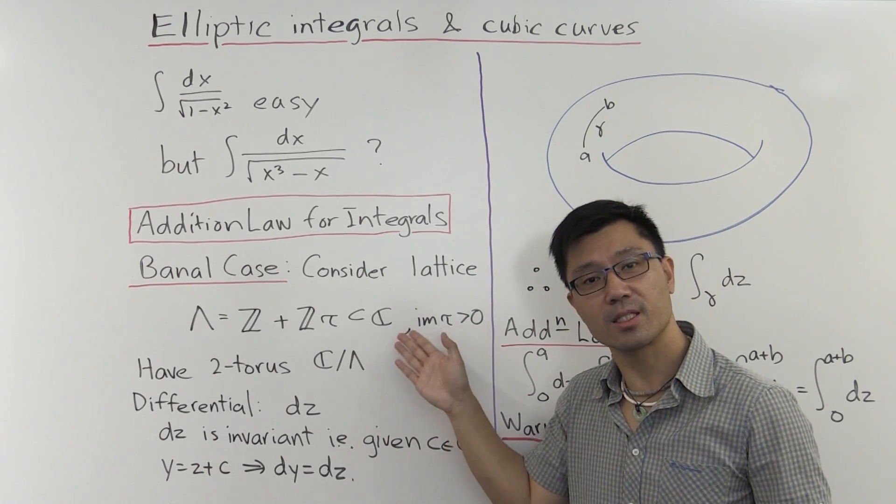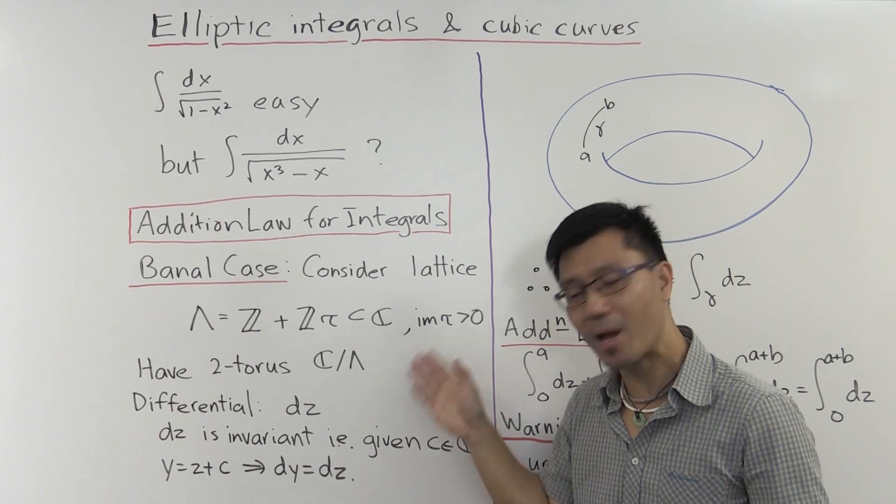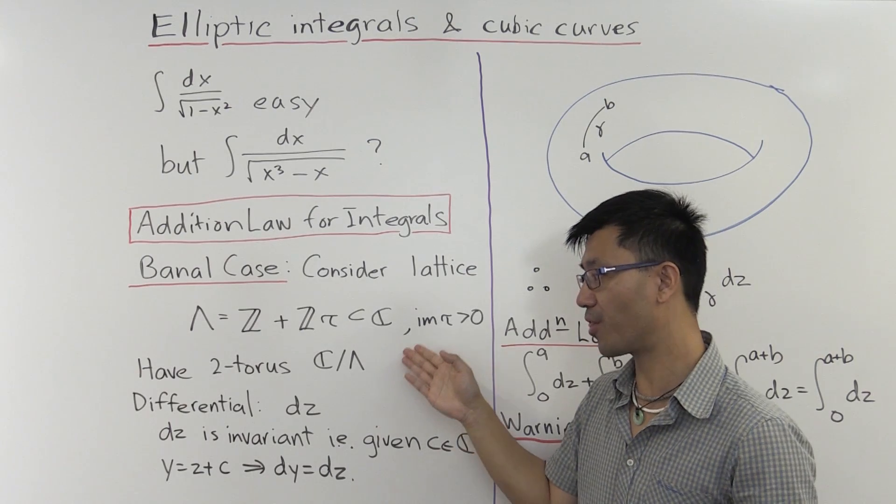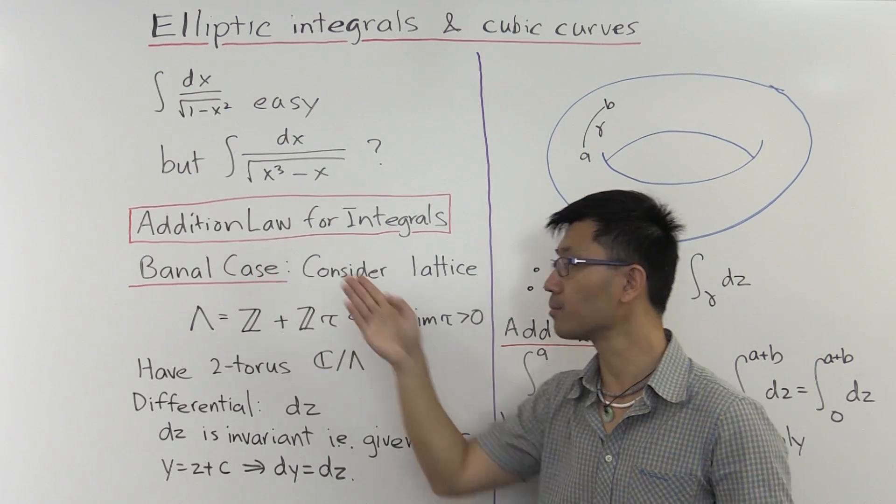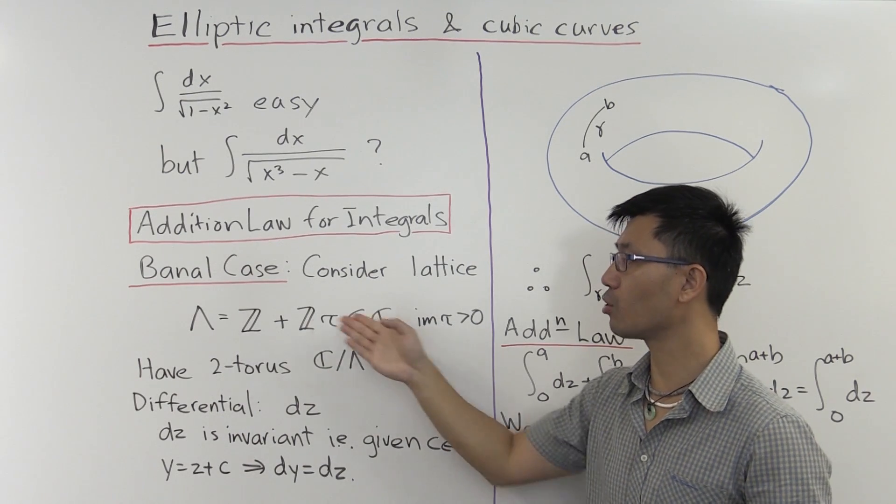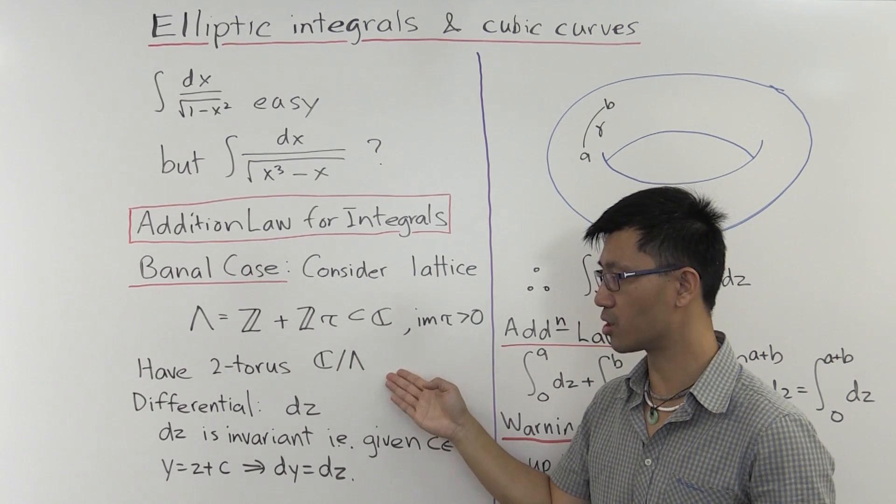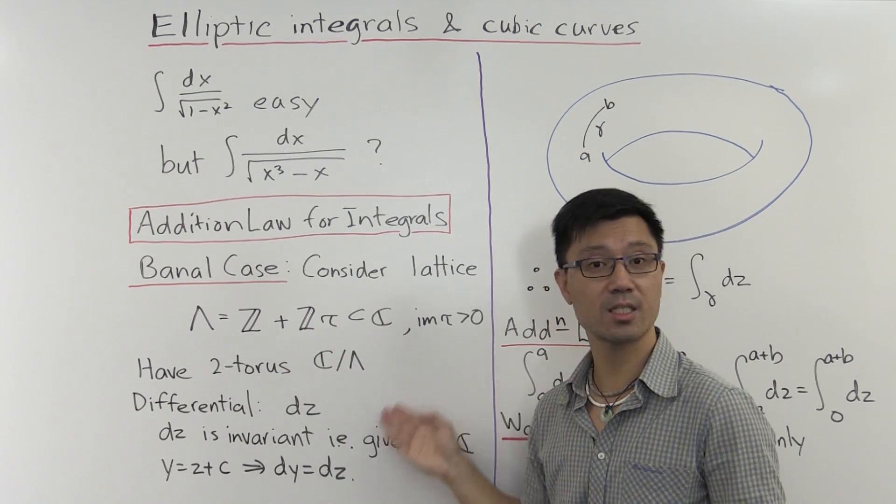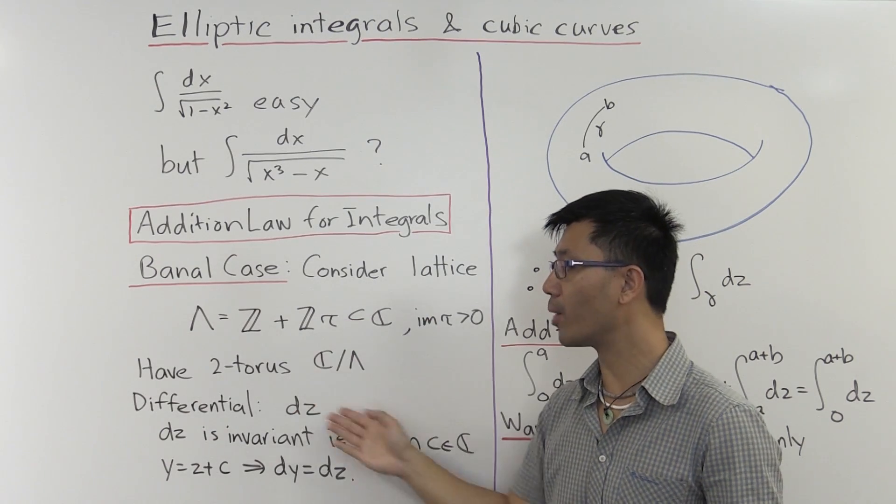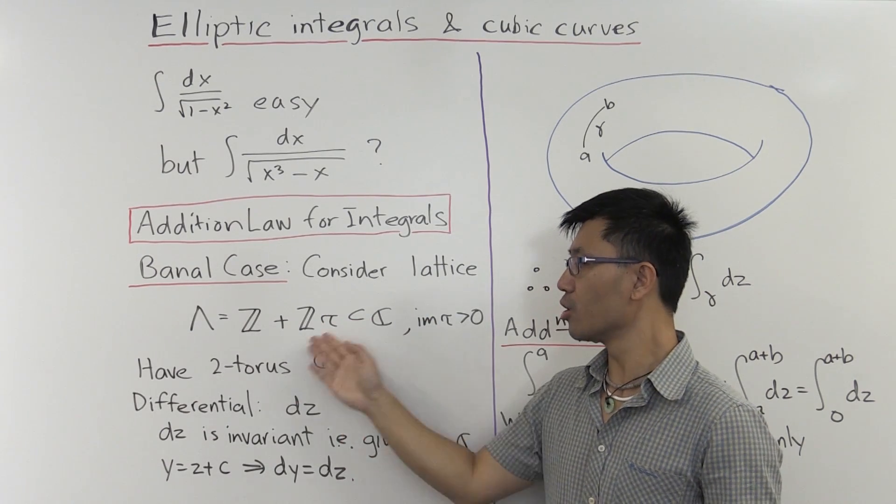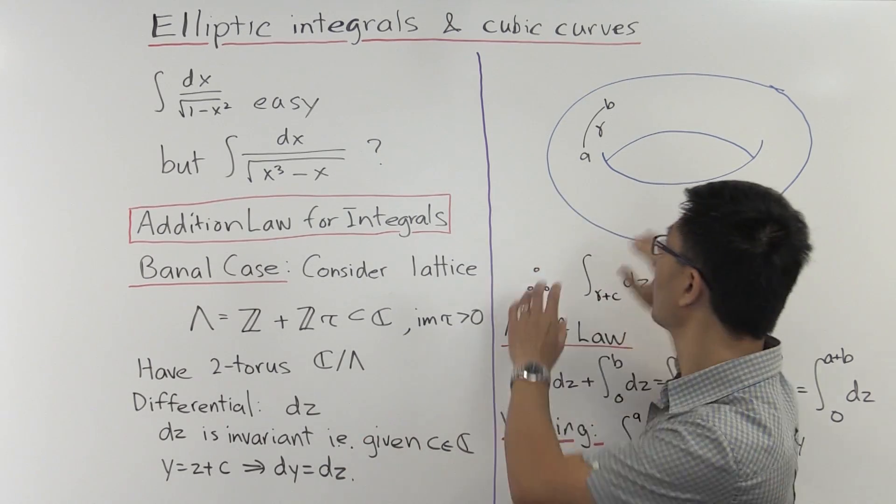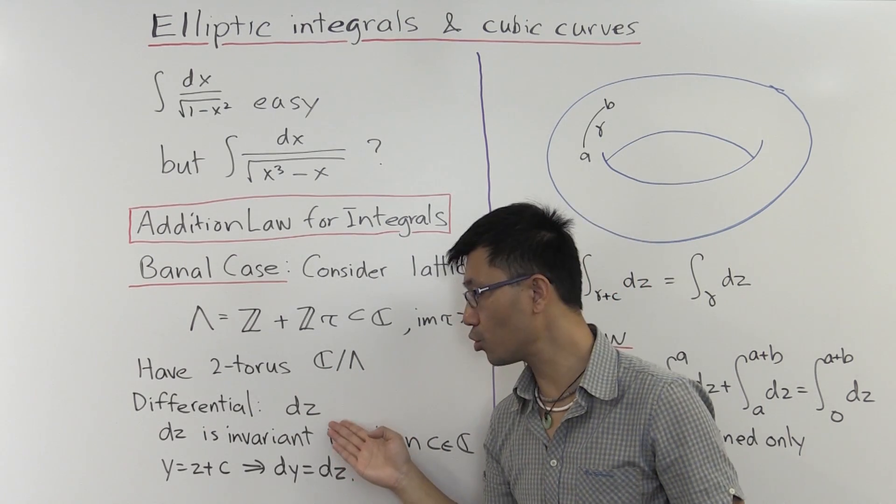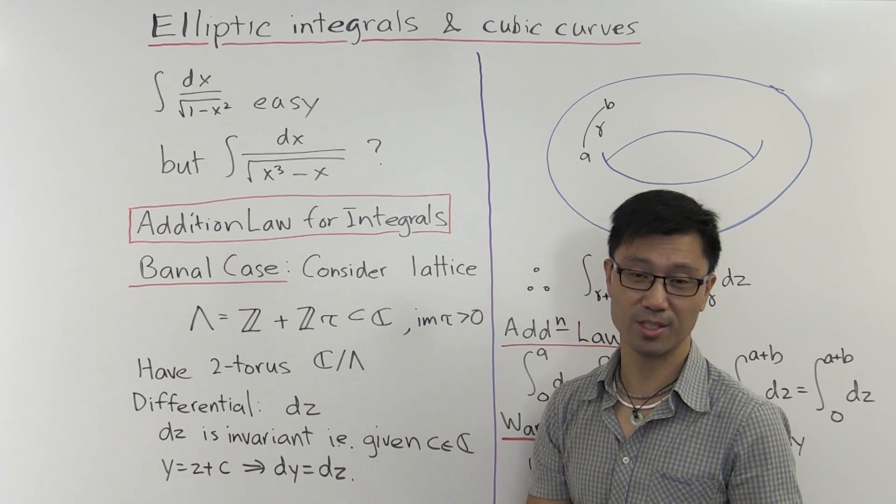Now what's very important in this example here that's very special is the fact that there is an extra group structure here. And that's the thing which is going to give us our addition law. So there's a group structure here because this is a group and this is a subgroup. This is just a quotient group. And in particular what we can do is we can look at the symmetry of this group and how it acts. So the symmetry is given by translations on the torus. And so you can try to translate this differential too. If you haven't seen this sort of thing before, let me show you how it works.